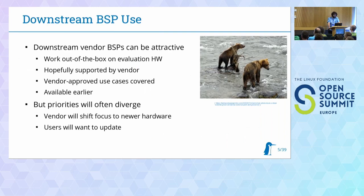Many of these systems use downstream BSPs — BSPs often provided by the silicon vendor or by a module vendor. They are quite attractive because they work out of the box on evaluation hardware when you don't have your own hardware yet, they come with demos, they are hopefully supported by the vendor for some time, and they are usually available earlier.